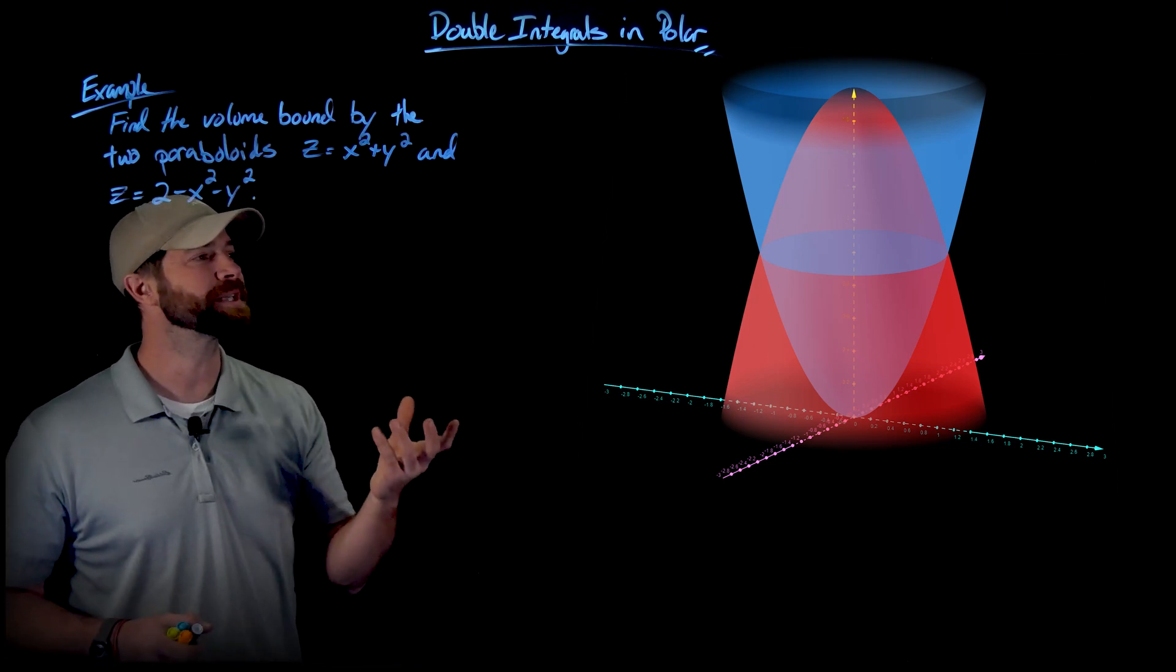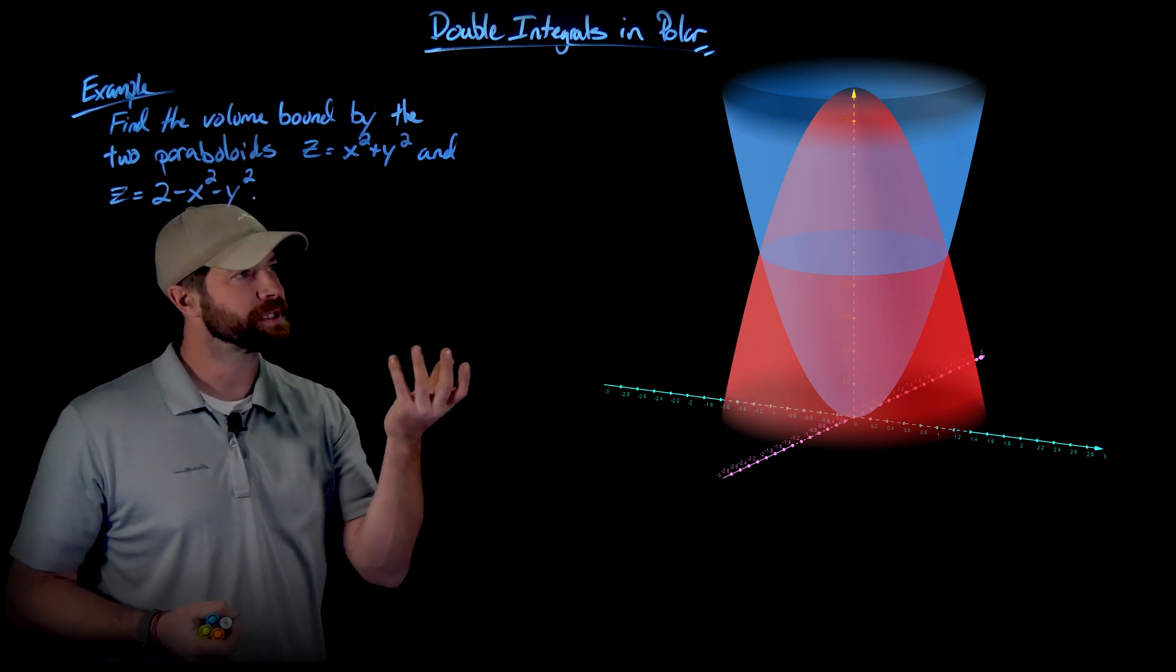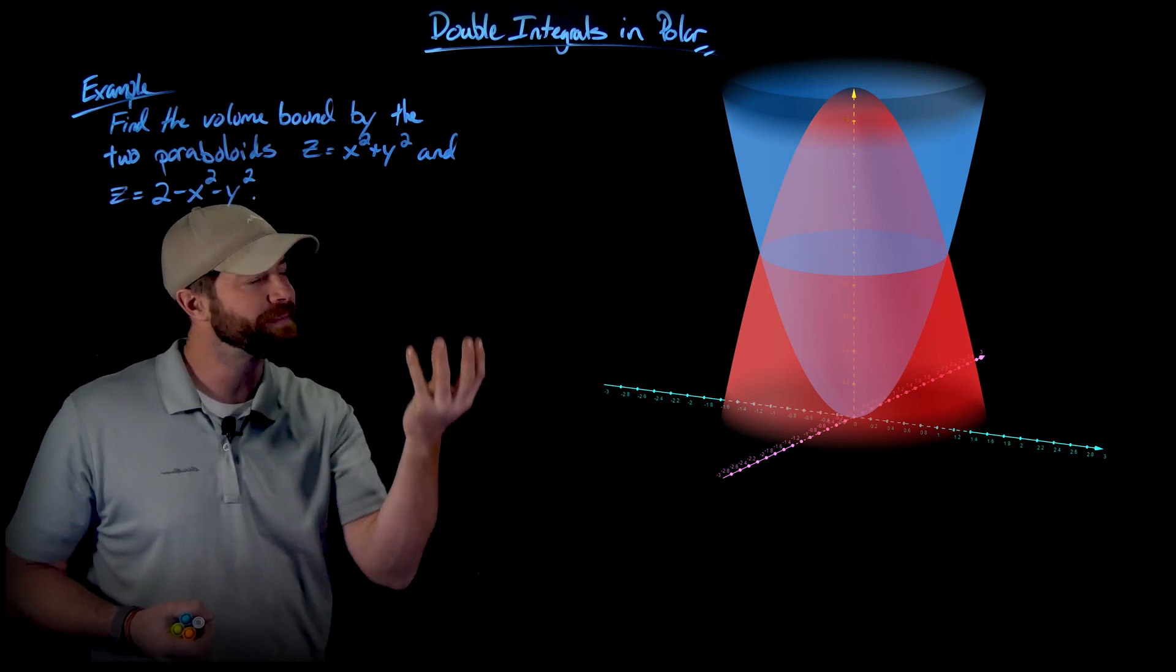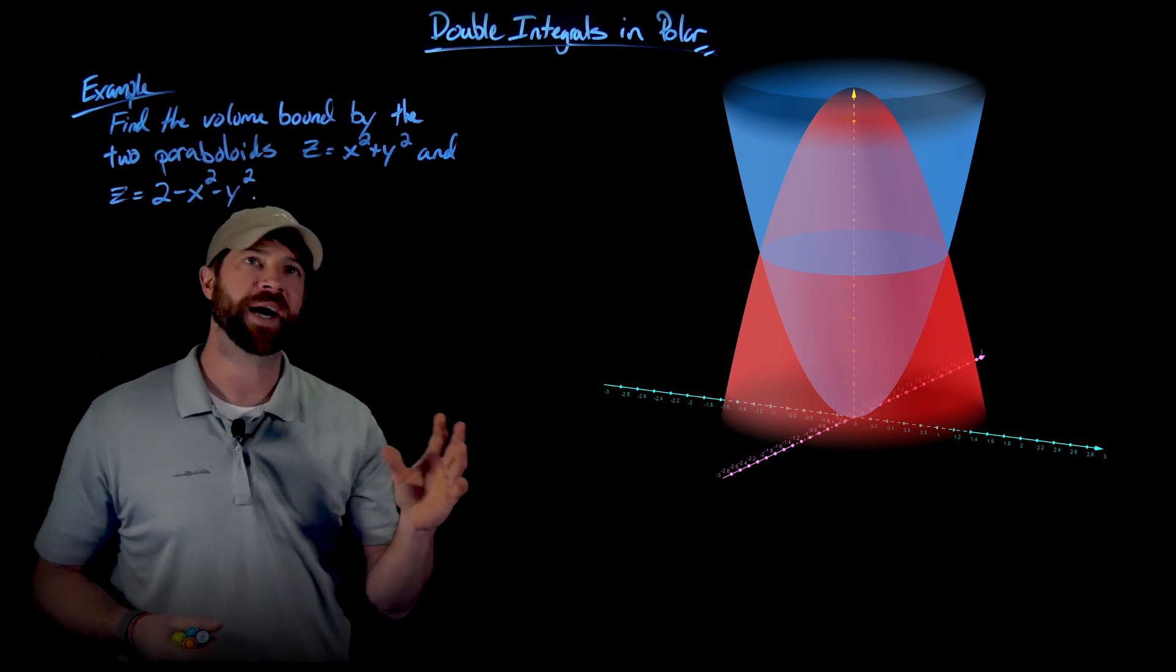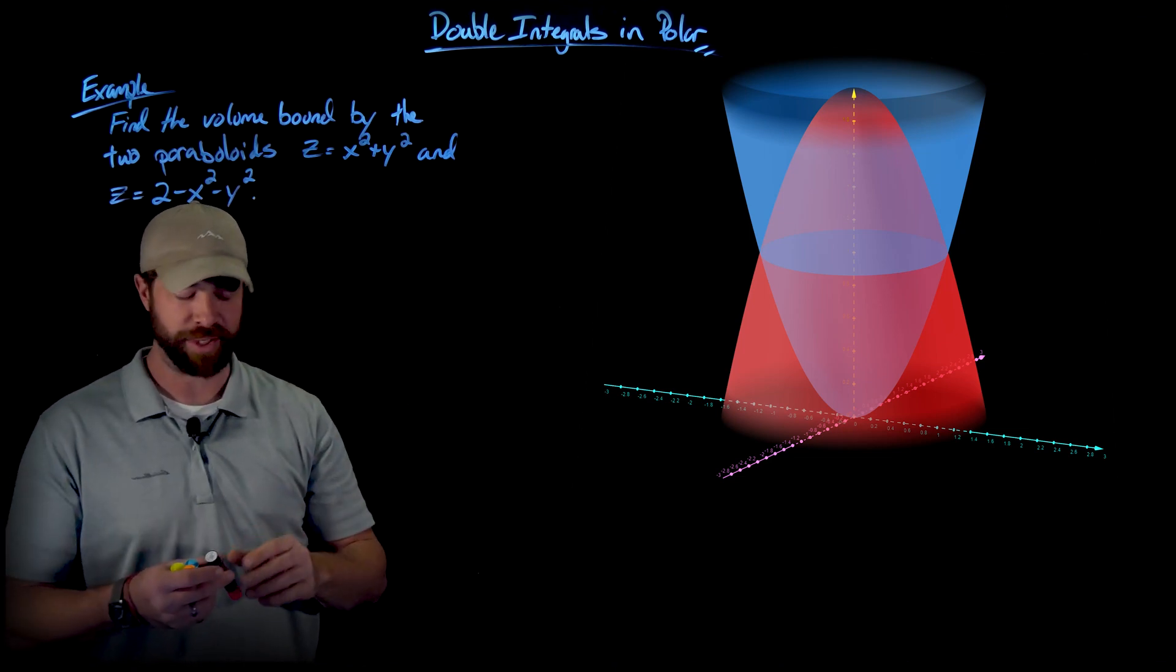But what we need to do to make this calculation is to find the region over which we want to integrate and have that region projected on the xy plane. We can find that by setting these equal to each other.